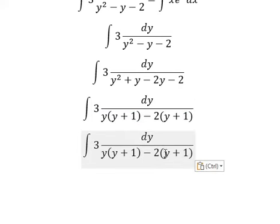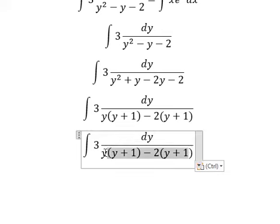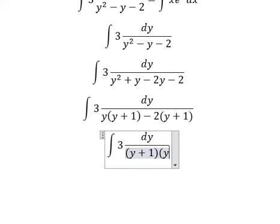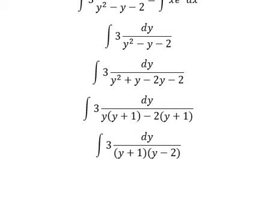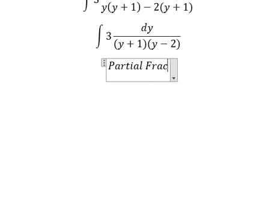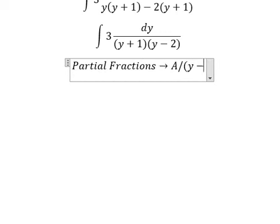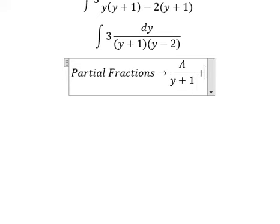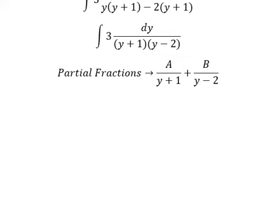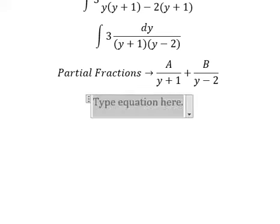So y plus 1, y plus 1 — we can do another factorization. Next, we can do partial fractions: capital A over y plus 1, and capital B over y minus 2, and capital B over y plus 1. After that, we do a common denominator.